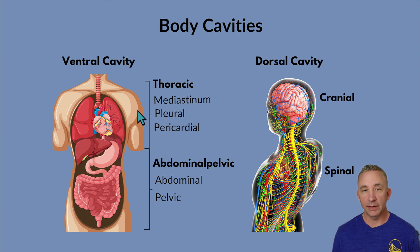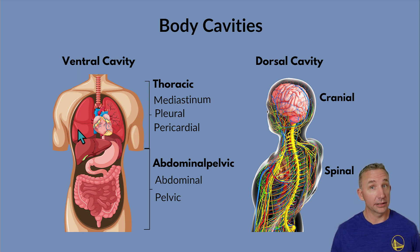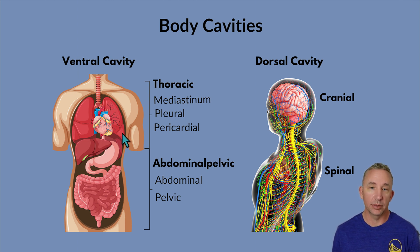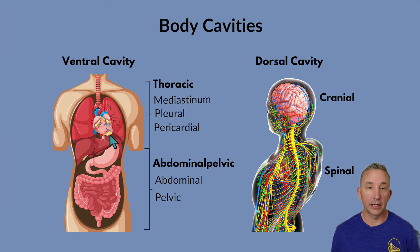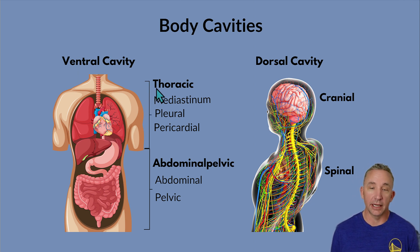The pleural cavities refer to my lungs. My right lung — and when I say right, it's always referring to how I look at it in the anatomical position — that space is the right pleural cavity. For my left lung, the left pleural cavity. And then the pericardial cavity holds my heart; it sits in the pericardium. All of those make up the thoracic cavity.